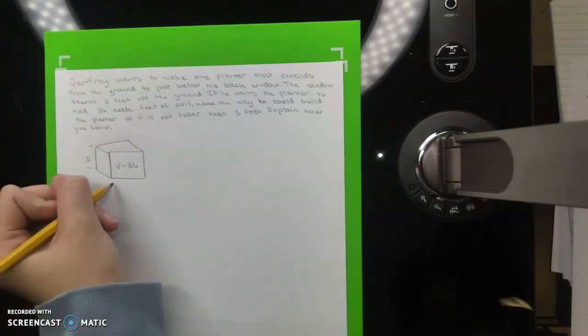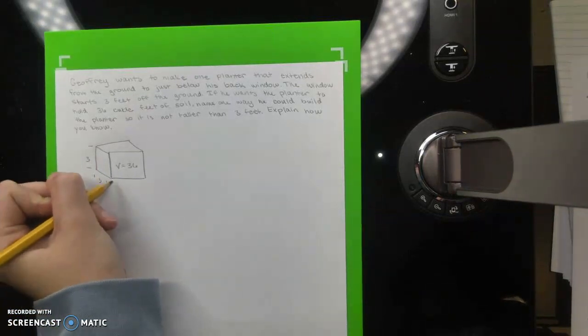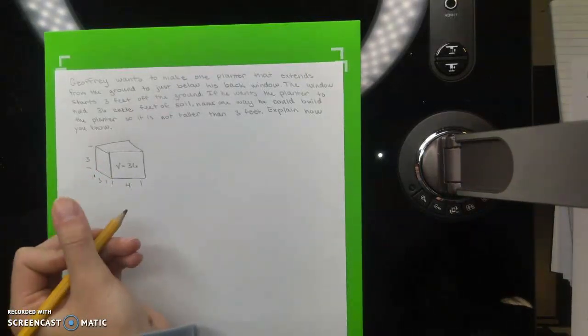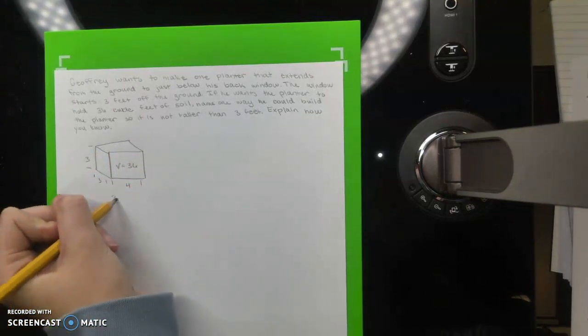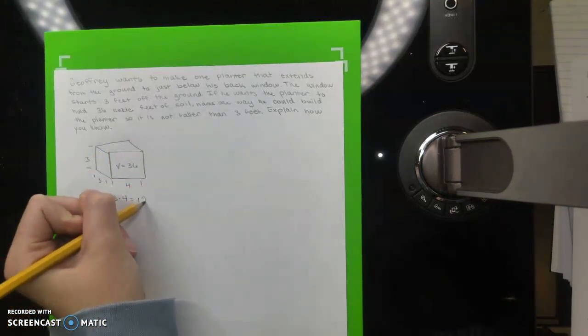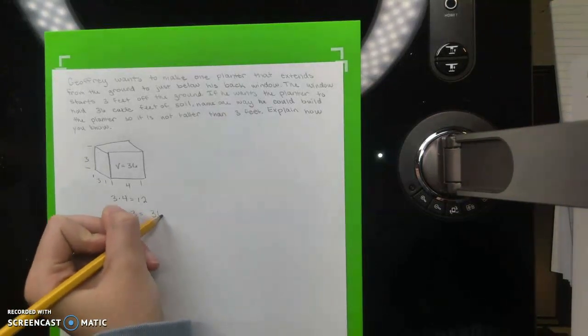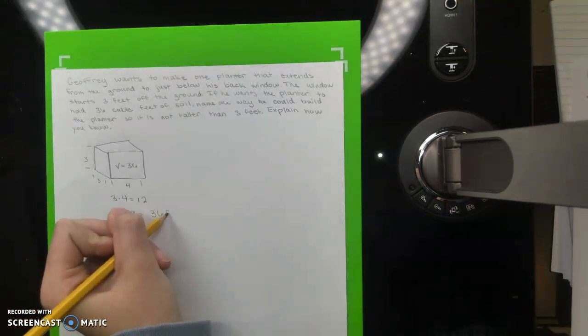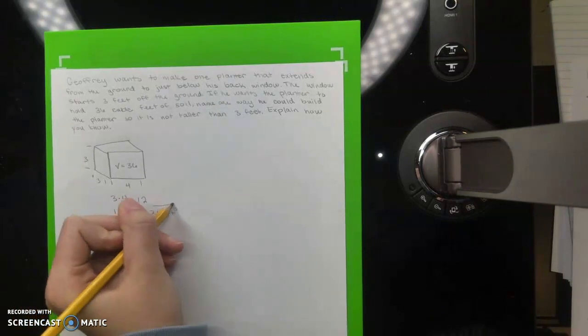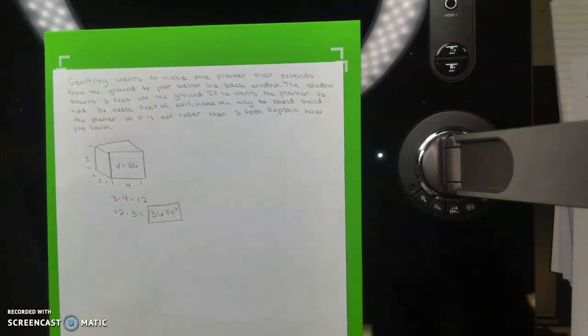On the bottom, there's going to be three and four, because when you multiply those, that's how you get your area. So the planter has the dimensions of four, three, and the height of three feet as well, therefore making your volume 36 cubic feet.